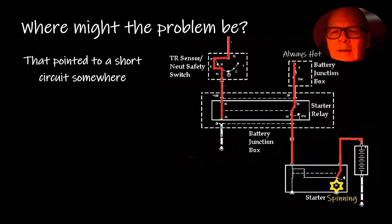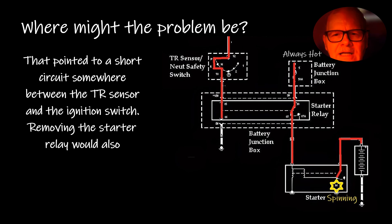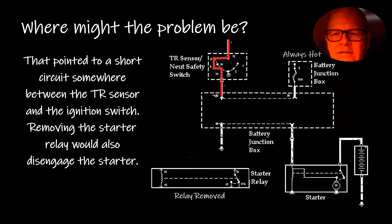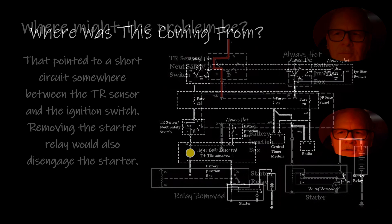That pointed to a short circuit somewhere between the transmission range sensor, which would be your neutral safety switch, and the ignition switch. Removing the starter relay would disengage the starter as well. I started methodically working my way trying to track this thing down and pinpoint where this problem was coming from.